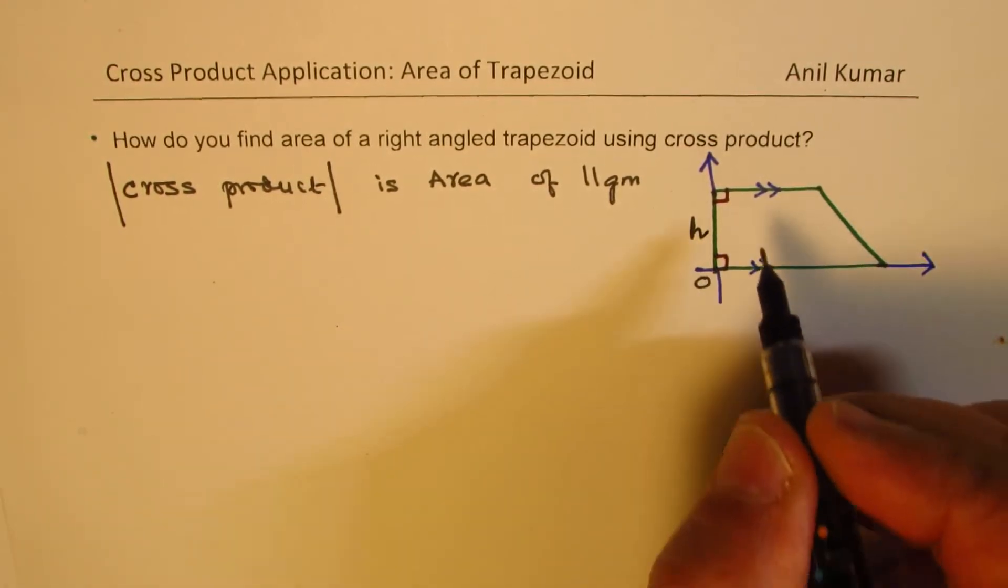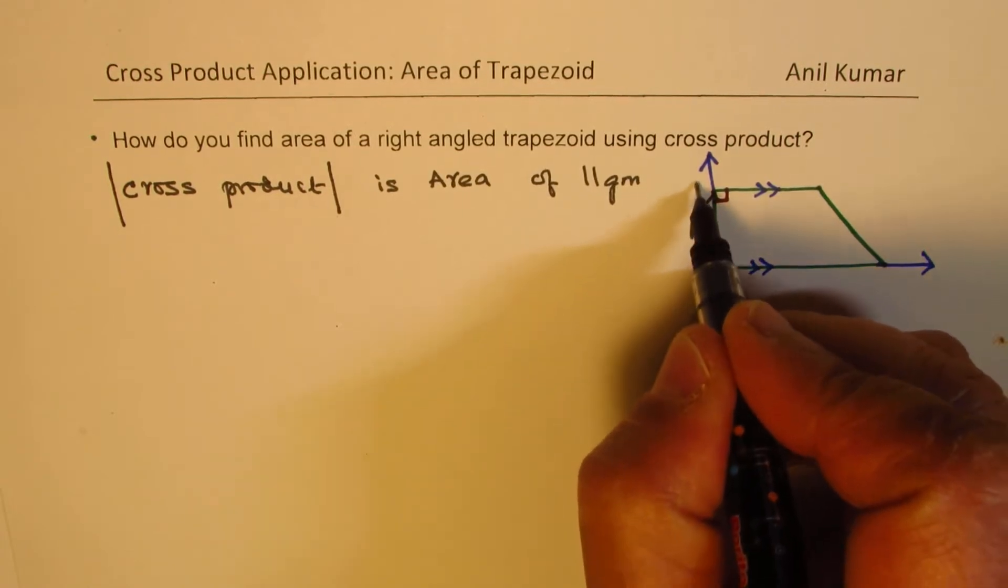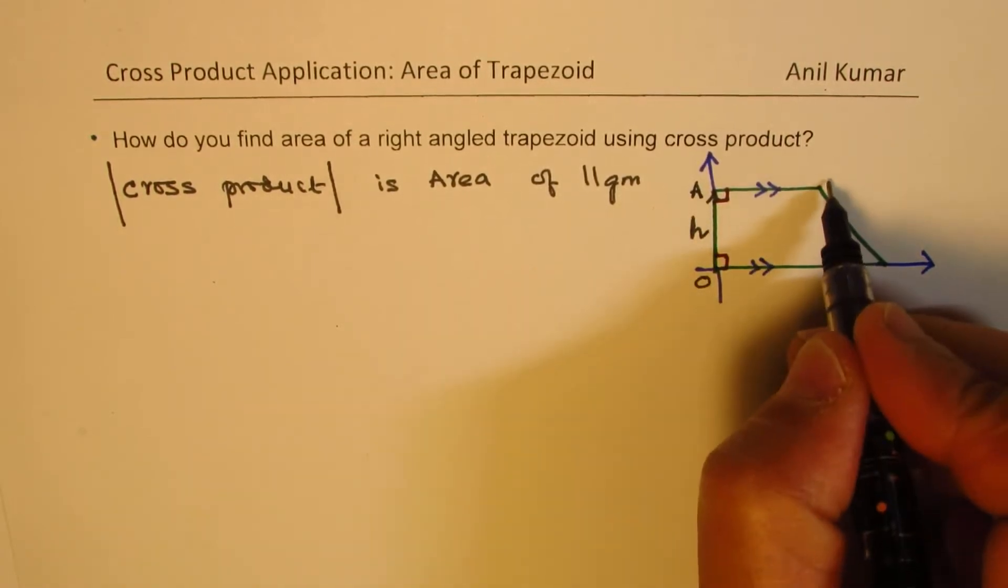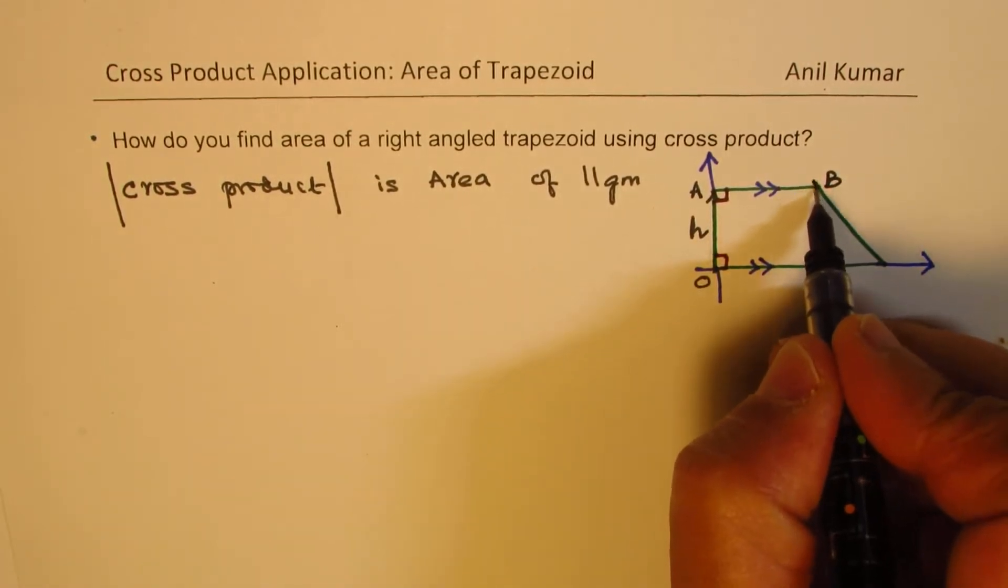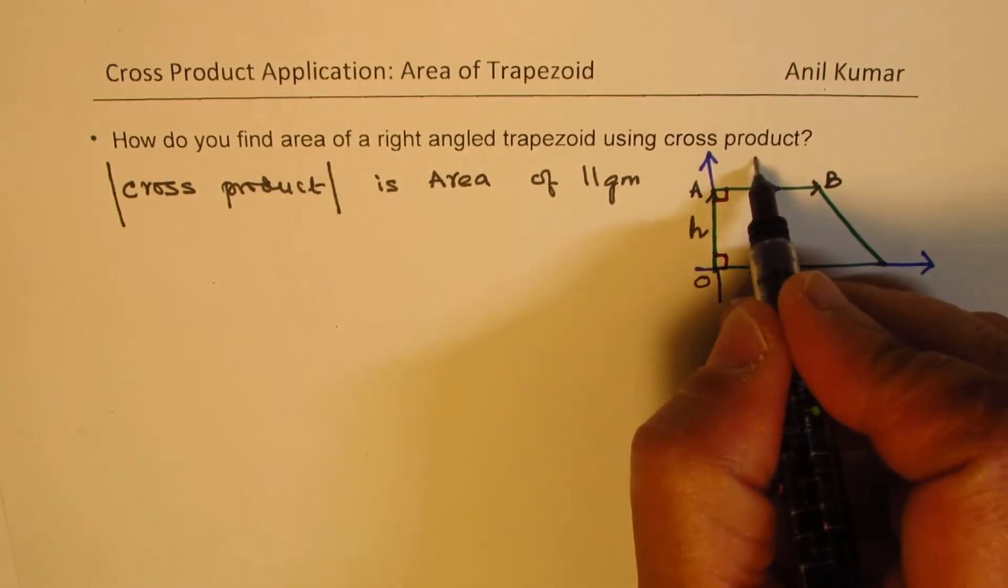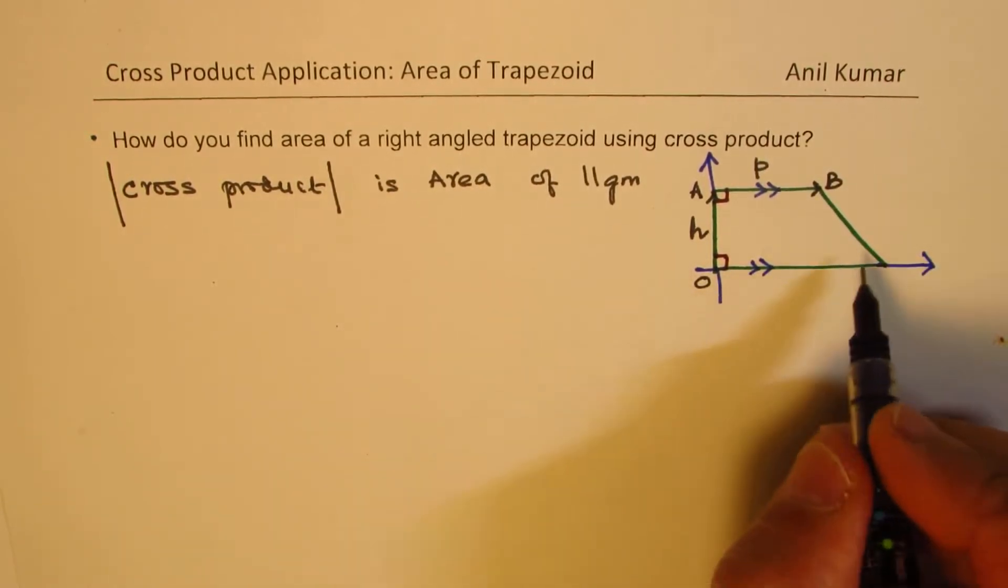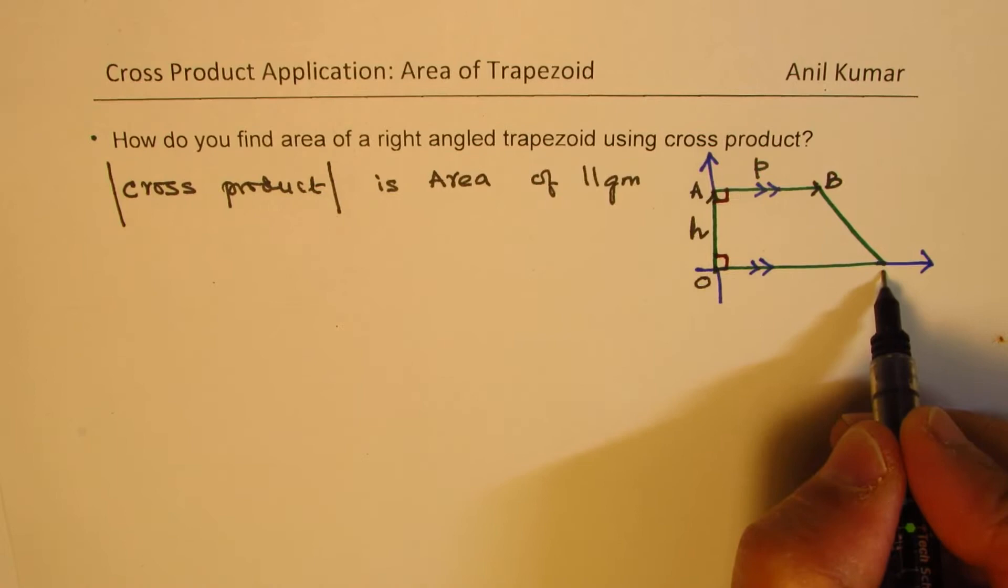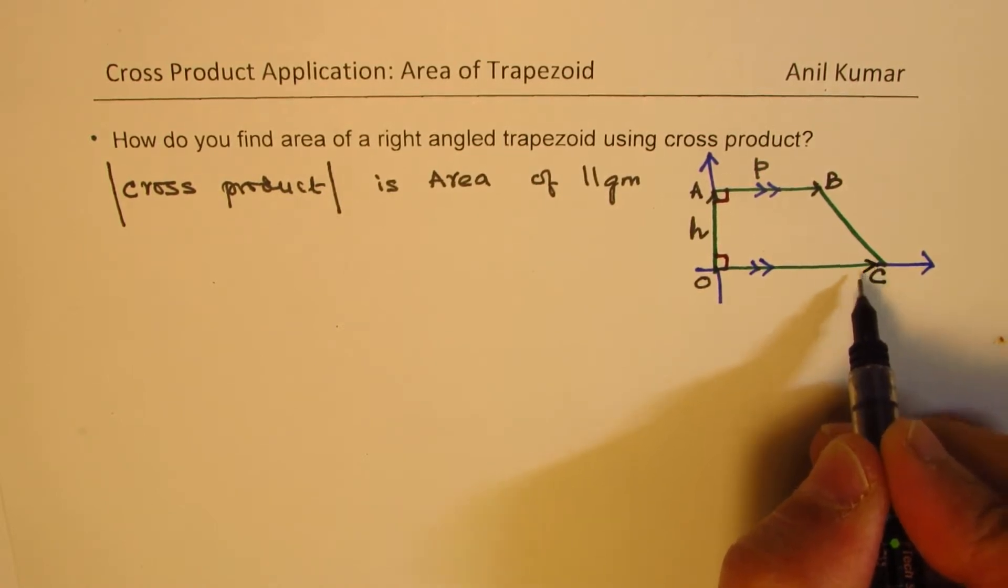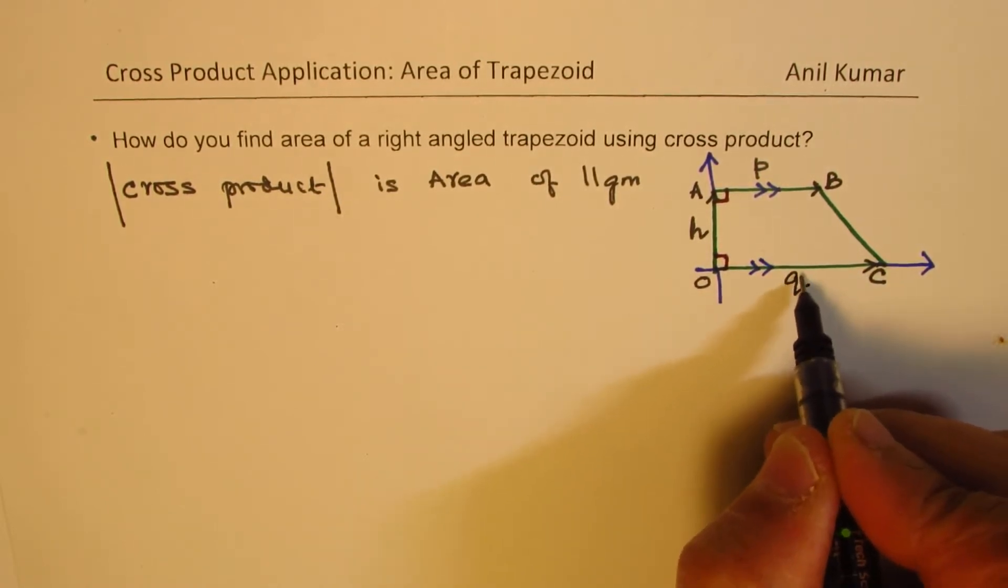H as a vector, which is from O to A and from A to B, let's say this is the vector P for us and from O to C, let this be vector Q for us.